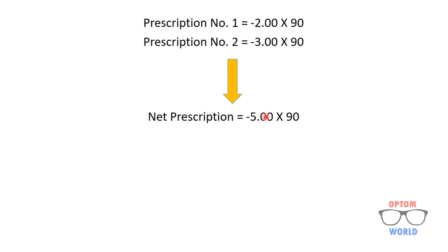In the case where the signs are the same, we do simple math: three plus two point five minus five gives the cylinder at 90 degrees axis.